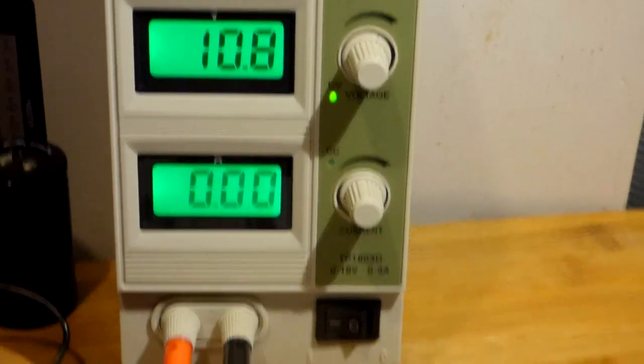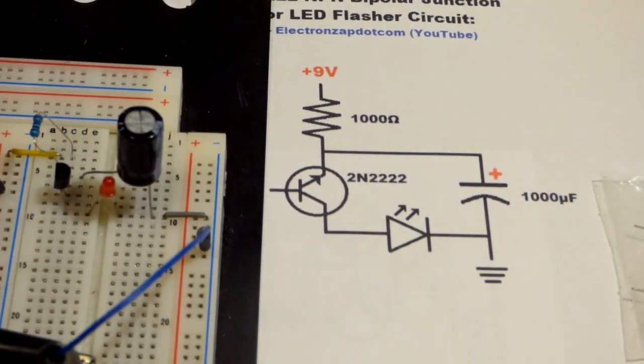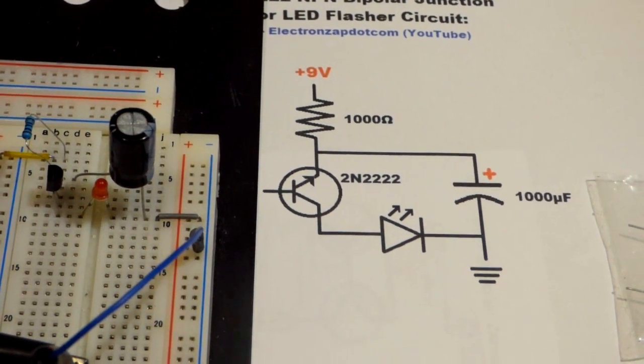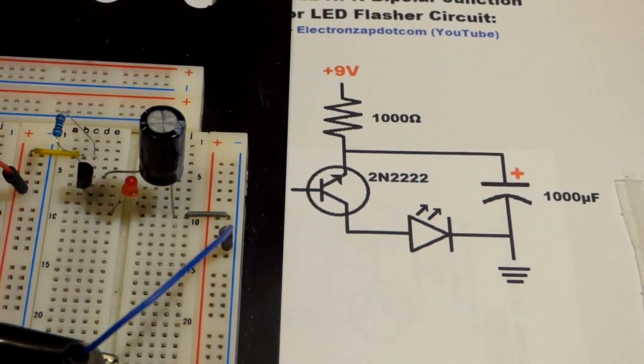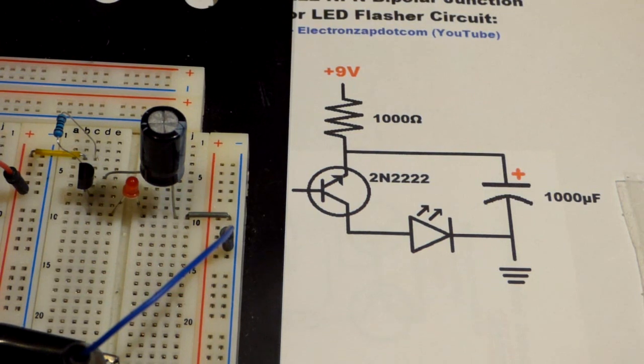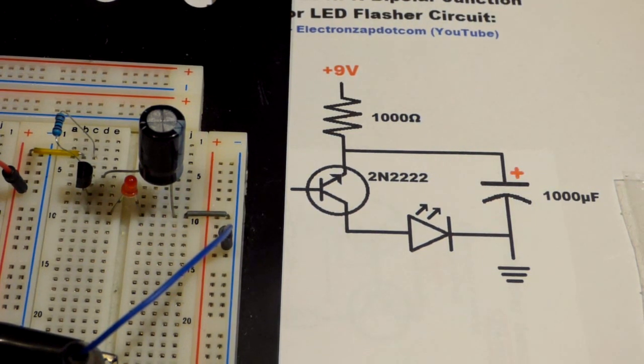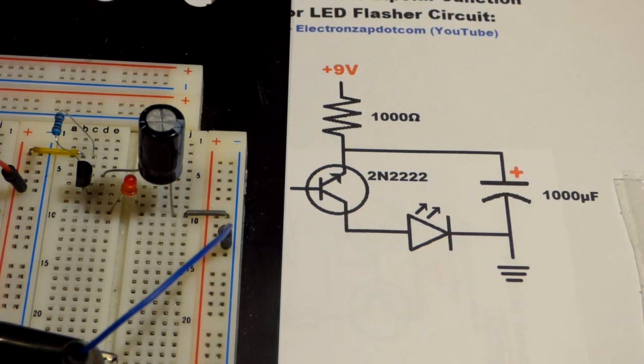You can see just slightly less than 11 volts. In any case, it's hardly using any current either. Let's drop her back down to 9 volts. 9 volts is actually the minimum. Let's go to 8.5, you can see it's not flashing at all. So it's got to be at least 9 volts, but you can go above that a bit.